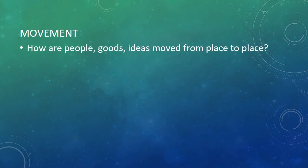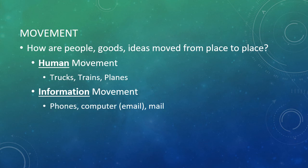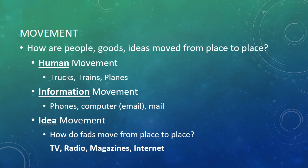Movement asks: how are people, goods, and ideas moved from place to place? Human movement involves trucks, trains, and planes. Information movement involves phones, computers, email, and mail. Idea movement — how fads move from place to place — happens through TV, radio, magazines, and the internet.